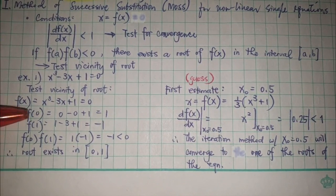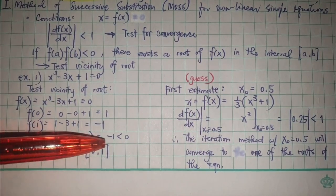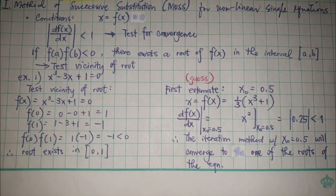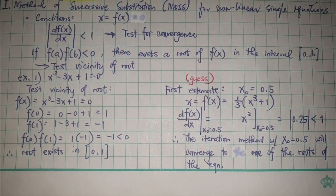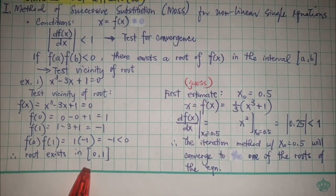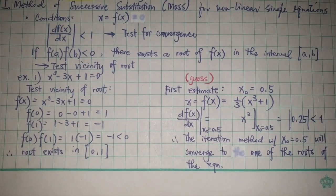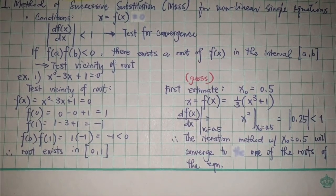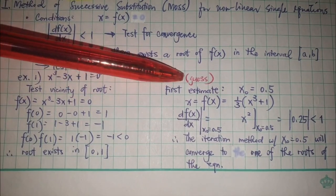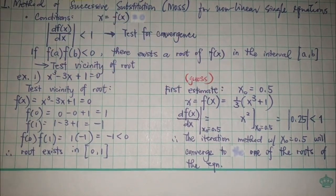When I multiplied the two functions, it gave me a negative number. It proved that there exists a root in the interval from 0 to 1. So we can try any number between them. My first guess was 0.5.